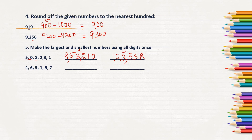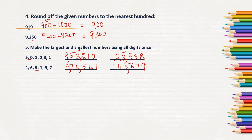For the second set of digits — 9, 6, 7, 6, 5, 4, 1 — arrange from greatest to smallest for the largest number: 9,76,641. For the smallest number, arrange from smallest to greatest: 1, 4, 5, 6, 6, 7, 9 → giving 1,45,679.